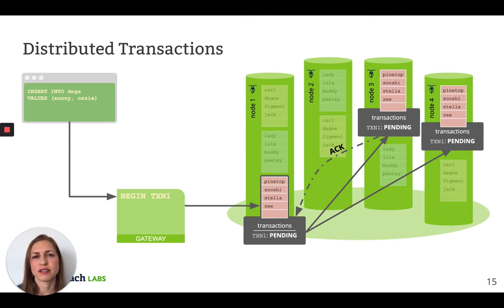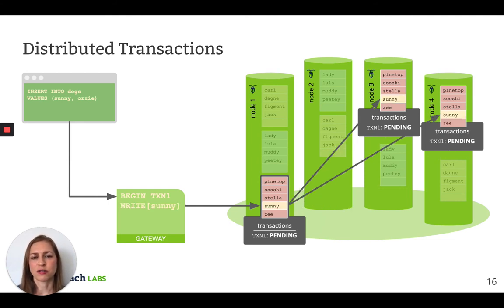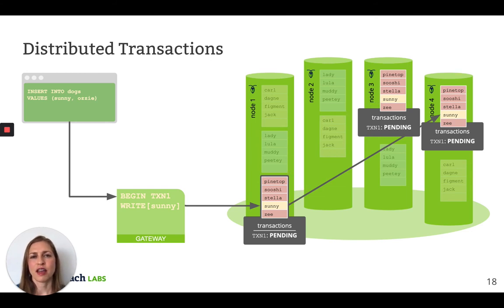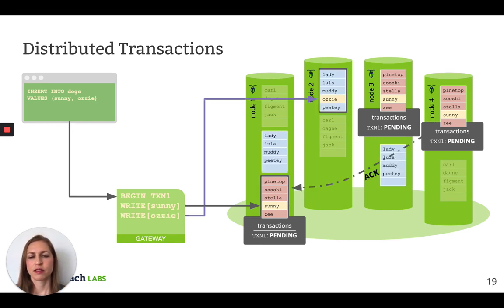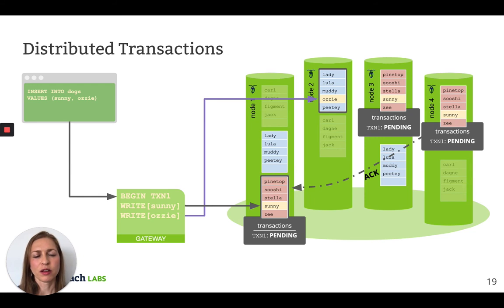Once the leaseholder and at least one of the followers accept the creation of the transaction record, the transaction is in progress. Next, the same leaseholder proposes a Raft command that writes Sunny to itself and the followers, and again waits for a quorum before moving on. Notice that I've highlighted Sunny in yellow, which indicates that Sunny has been updated by an active transaction that may or may not be committed. We tag each updated record with the transaction ID so that other transactions can check the corresponding transaction record to determine the status. Moving on to the next operation, we write Aussie — the gateway node passes the operation to the leaseholder for the range containing Aussie, and this is happening in parallel with the final replica of Sunny acknowledging the write, since we already had a quorum.